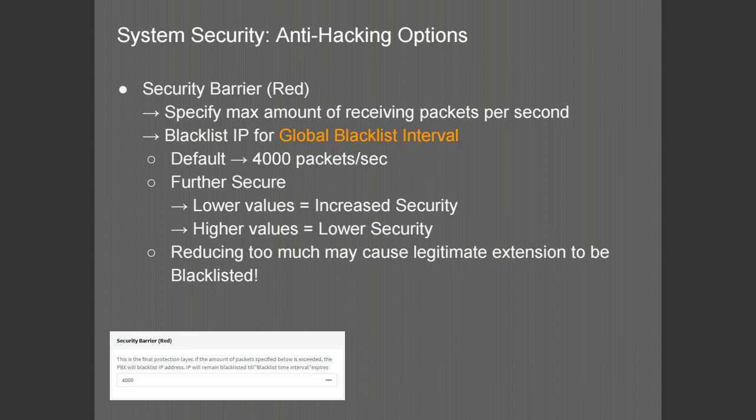Finishing off with the red security barrier — this is the final frontier, the final protection of the PBX. Any amount of packets exceeding this threshold will place that particular IP address into the blacklist for the global blacklist interval. You can increase security by lowering the value, or lower security by increasing the value. You can bring your amber and red security barriers close to each other so that rather than just temporarily blacklisting something, you can put it into the permanent blacklist.